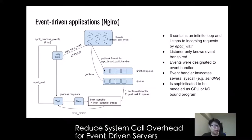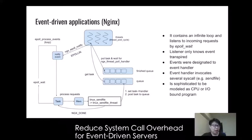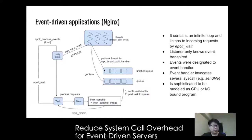An event-driven system typically consists of an event handler, event listener, and event channels. An event-driven application usually has an infinite loop which listens to incoming requests and designates these events to relevant handlers. A listener only knows when events have transpired, and the handler might interact with the underlying operating system, which means additional system call invocations.